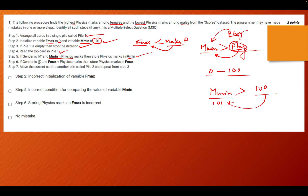Checking step 6: if the gender is F and f_max is less than physics marks, then store physics marks in f_max. This is also the correct logic — if the maximum variable holds a value less than the current physics marks, we update f_max so that in the next iteration it holds the maximum marks seen so far. Step 7 says: move the current card to another pile called pile 2 and repeat from step 3. From steps 1 through 7, the entire logic is correct. There are no mistakes in question number 1. The correct answer is option 4: no mistake.